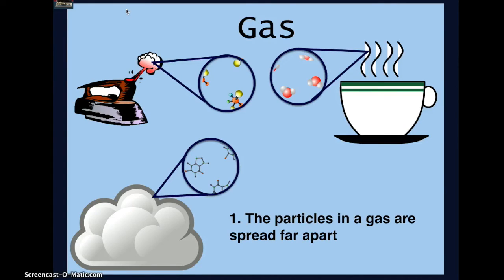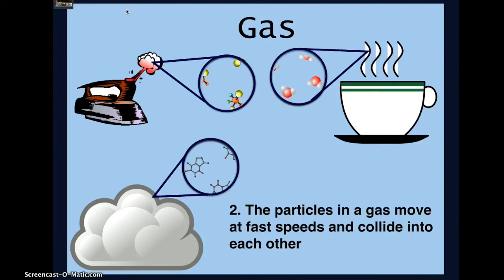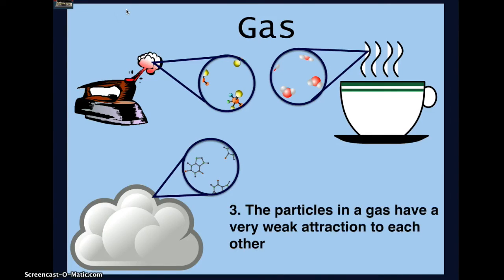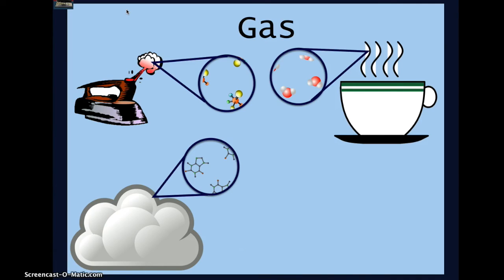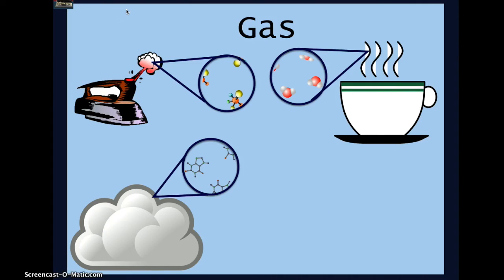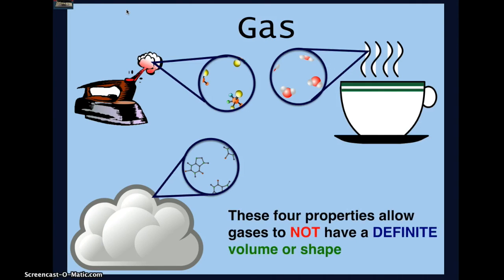The particles in a gas are spread far apart. The particles in a gas move at fast speeds and collide into each other. The particles in a gas have a very weak attraction to each other. And the particles in a gas can be compressed. These four properties allow gases to NOT have a definite volume or shape.